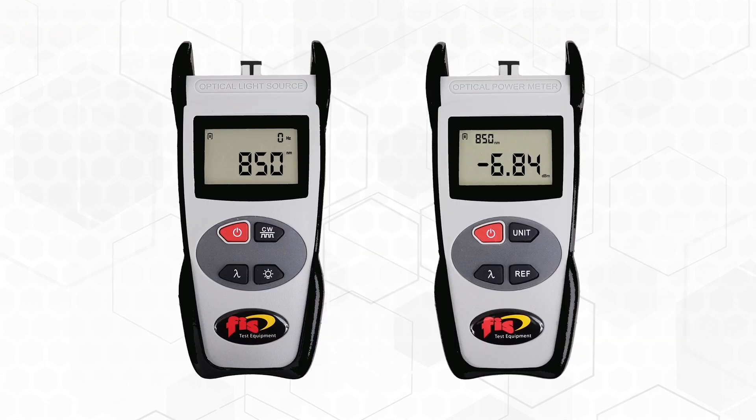The power meter and light source, called a test set when both are contained in the housing or presented together, measures only the net loss of light or the attenuation in a length of connectorized fiber. This is perhaps the most popular test performed.